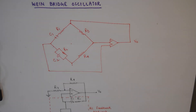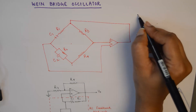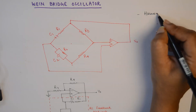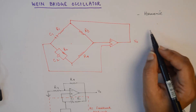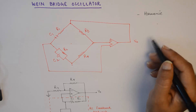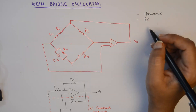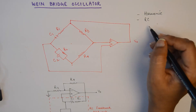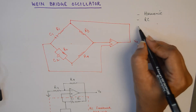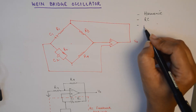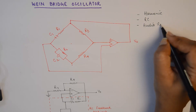Hello friends, welcome to a new tutorial in the series of analog electronics and instrumentation. Today we will talk about another type of oscillator which is a Wien Bridge oscillator. A Wien Bridge oscillator is a simple harmonic oscillator, meaning it generates sinusoidal oscillations at the output. It is a combination of RC components, so it is categorized as an RC oscillator, and it operates in the range of audio frequency.